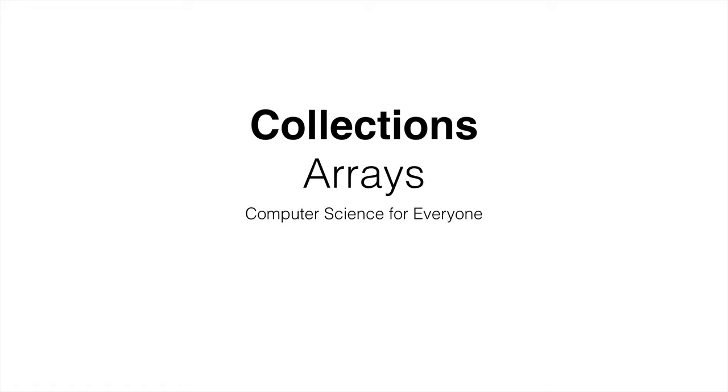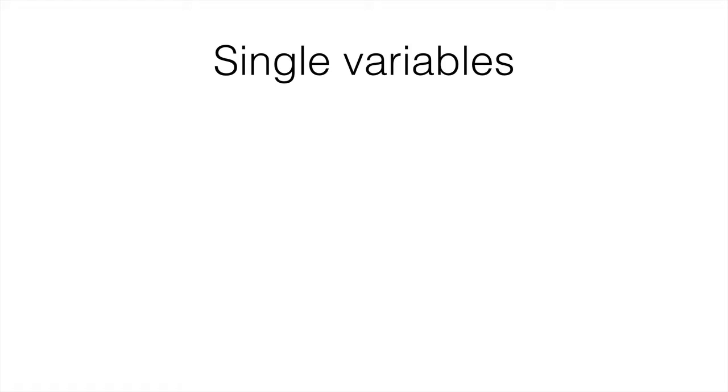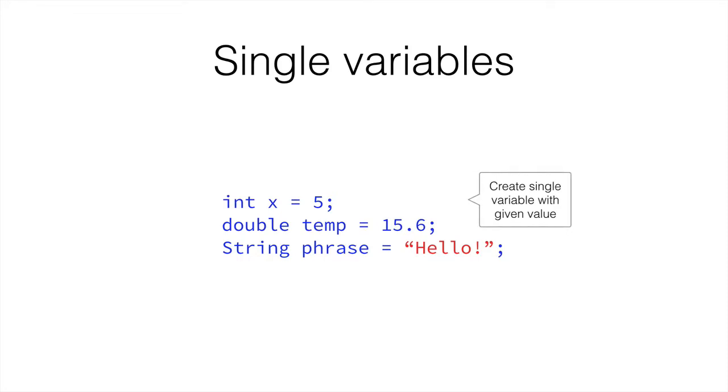So far we have seen how we can define a variable, like so. For example, an integer x that has the value 5, a double called temp that has 15.6, or a string phrase with the value hello. So we can create single variables with a single value.